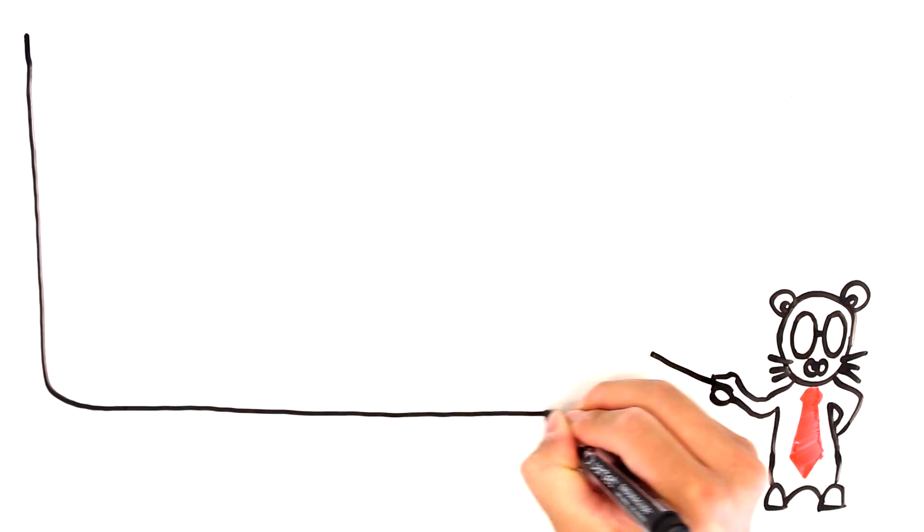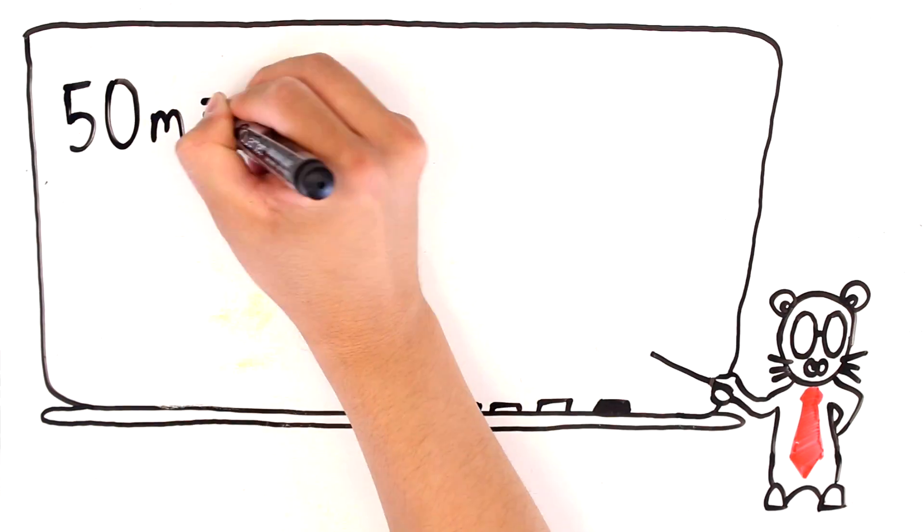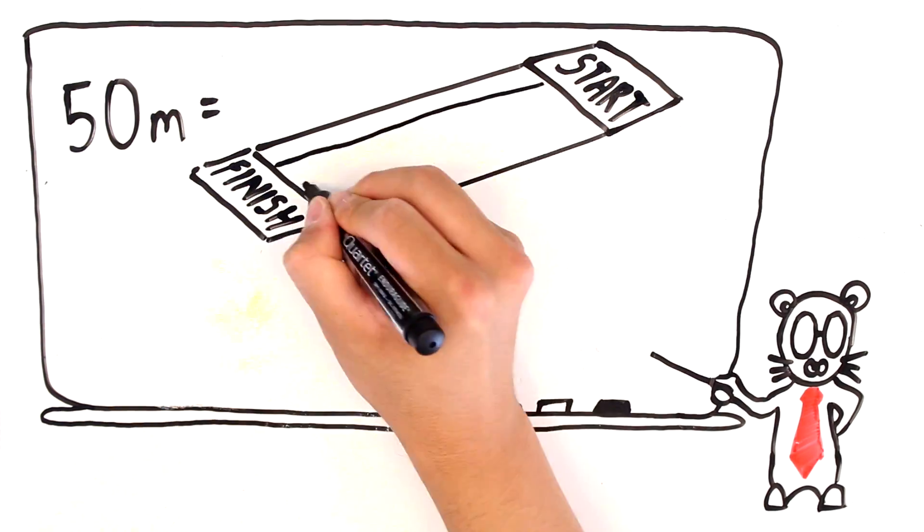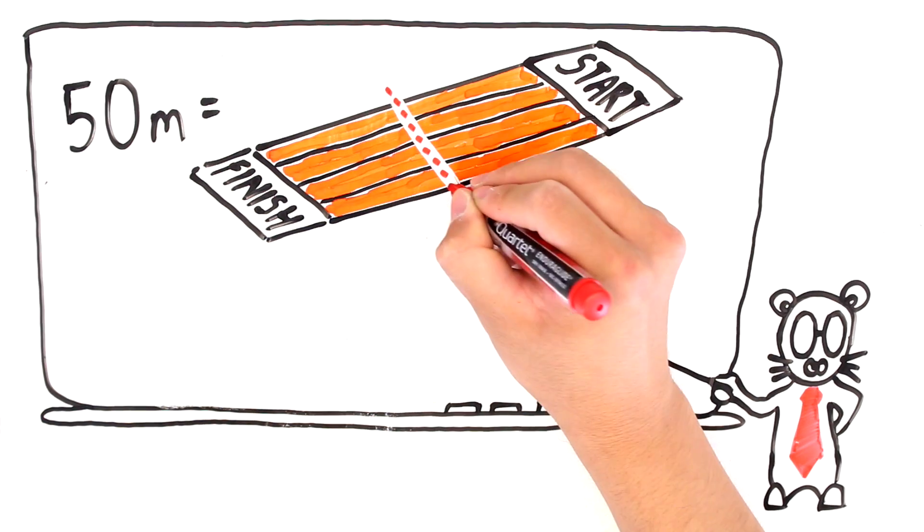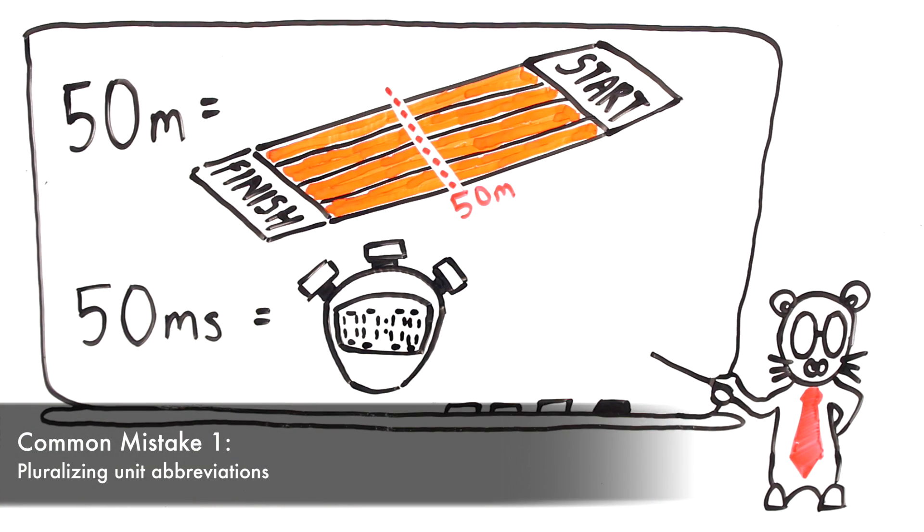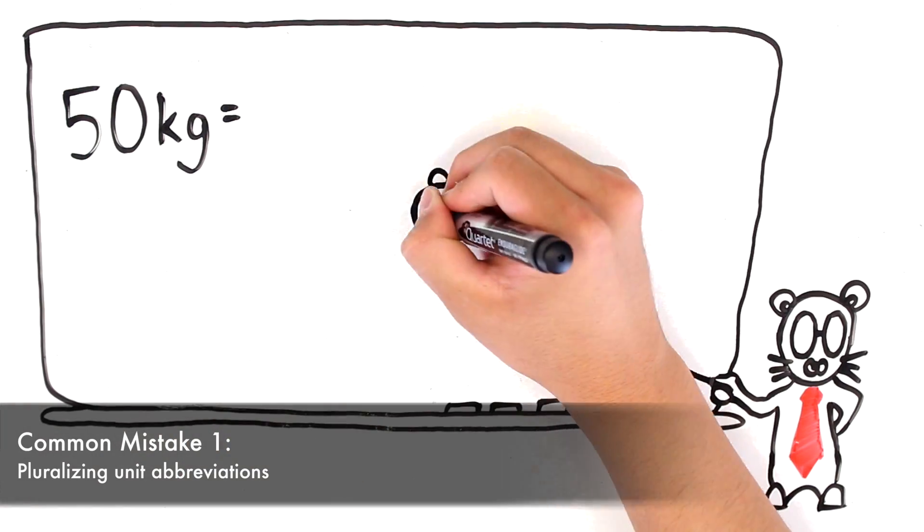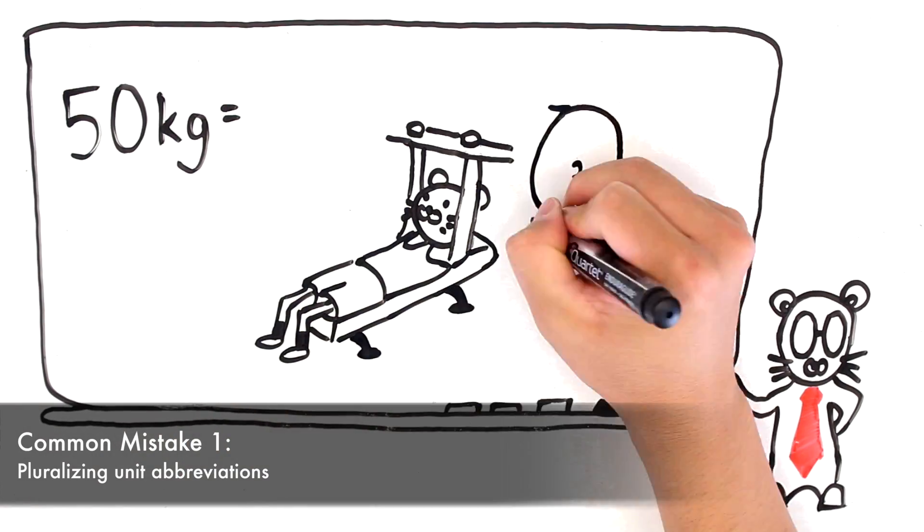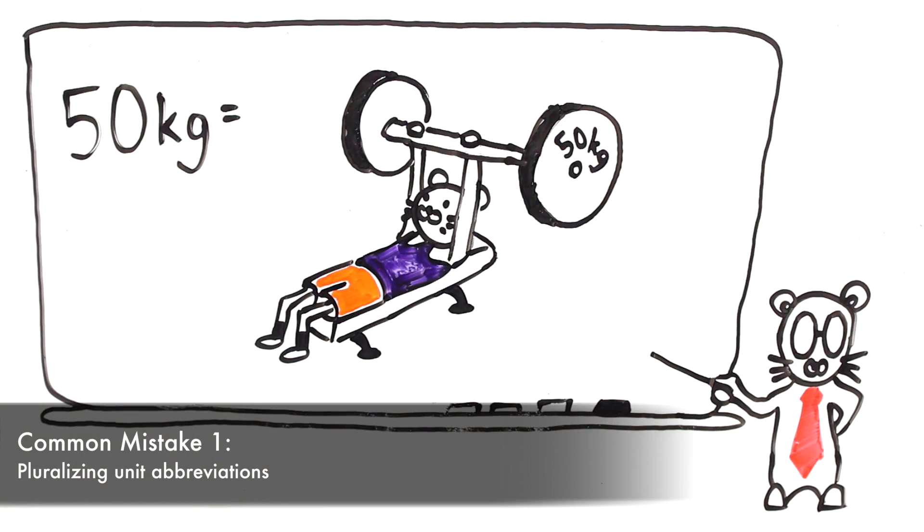Grammar Squirrel and her friends then have a flashback, and realize that their teacher mentioned earlier that one of the most common mistakes is to pluralize unit abbreviations. So, for example, in the case of meters, adding the S to the abbreviation creates a completely different unit.